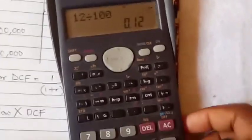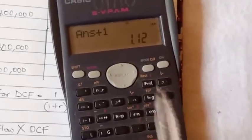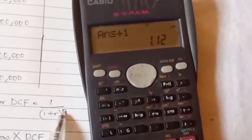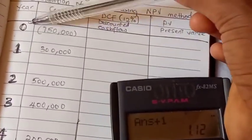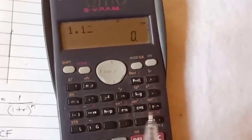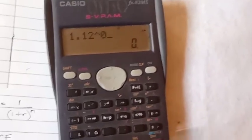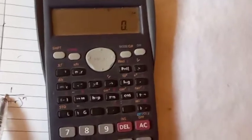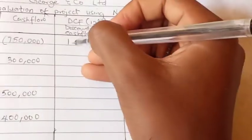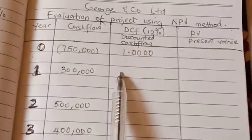So 12 over 100 gives us 0.12. 1 plus that 0.12 is what we are going to solve. So 0.12 plus 1 is 1.12, and remember it has a power which is what we are going to solve. So it is raised to n. 1 over 1.12 raised to 0, 1 over 1 is 1, so our discounted cash flow for year 0 is 1.